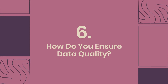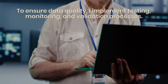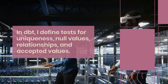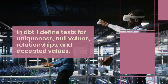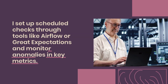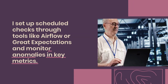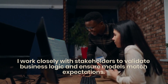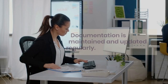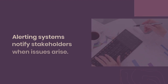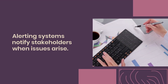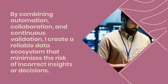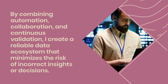Question 6: How do you ensure data quality? To ensure data quality, I implement testing, monitoring, and validation processes. In DBT, I define tests for uniqueness, null values, relationships, and accepted values. I set up scheduled checks through tools like Airflow or Great Expectations and monitor anomalies in key metrics. Data is version-controlled using Git to track changes. I work closely with stakeholders to validate business logic and ensure models match expectations. Documentation is maintained and updated regularly. Alerting systems notify stakeholders when issues arise. By combining automation, collaboration, and continuous validation, I create a reliable data ecosystem that minimizes the risk of incorrect insights or decisions.